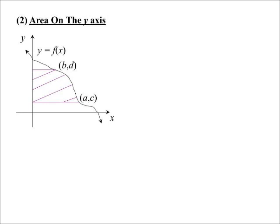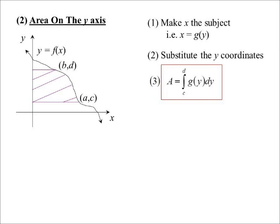What happens if instead of going to the x-axis we want to find the area to the y-axis? We have to rearrange so that x is the subject, because we need the function in terms of y rather than x. Because we're going to the y-axis, everything is done with respect to y. So the area element becomes dy, because we're going to the y-axis. We also have to change the limits to be y values, then integrate as normal.